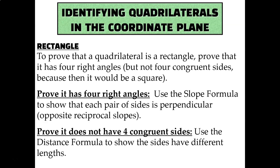A rectangle is a parallelogram that has four congruent or right angles. So to prove that it has those four right angles, use the slope formula to show that each pair of sides is perpendicular — in other words, show that they have opposite reciprocal slopes. But if you want to prove that it's just a rectangle and not a square, then you need to use the distance formula to demonstrate that it does not have four congruent sides, that all four sides are not the same length.